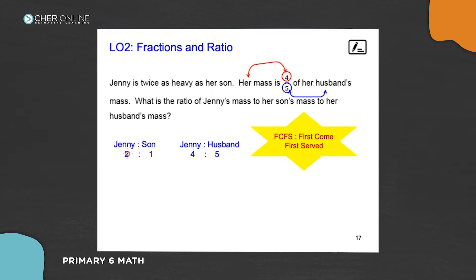So what do we do? We need to make sure the number of units for Jenny is the same for both the ratios that we write out. So, change this to match the four. Lowest common multiple of two and four is four. So, times two throughout, this gives me four to two. So then, after this, we can compare all three masses. Jenny to son to husband, that would be four to two to five.